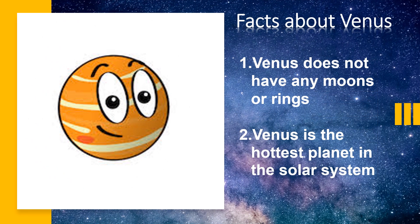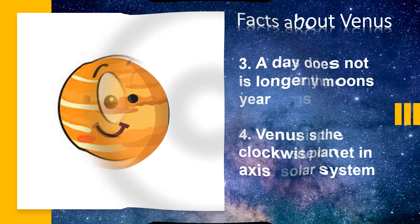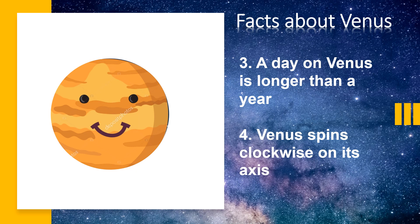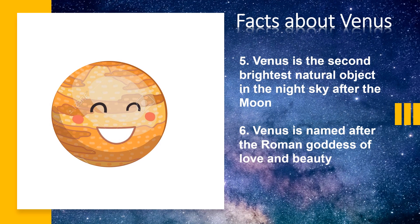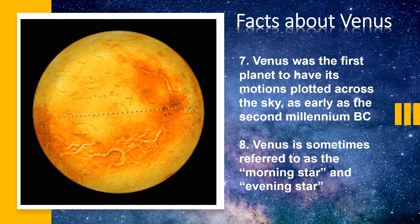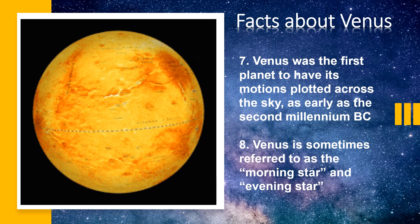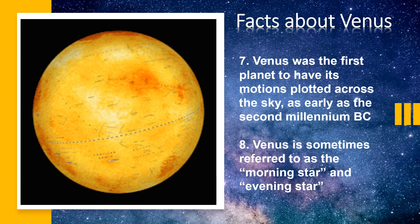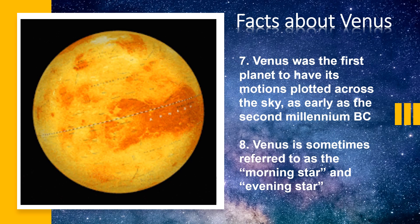Now let's look at facts about Venus. Venus doesn't have any moons or rings, similar to Mercury. Venus is the hottest planet in the solar system. A day on Venus is longer than a year, and Venus spins clockwise on its axis. Venus is the second brightest natural object in the night sky after the moon. Venus is named after the Roman goddess of love and beauty. It was the first planet to have its motions plotted across the sky, as early as the second millennium BC, and is sometimes referred to as the morning star and the evening star.